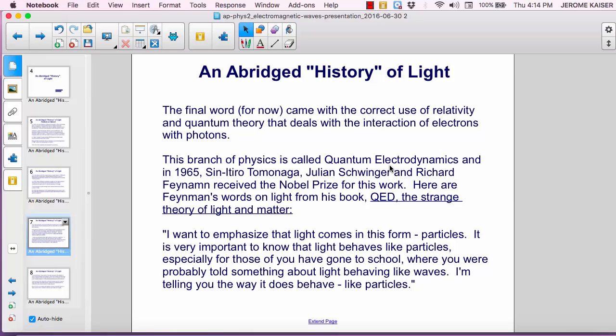This branch of physics is called quantum electrodynamics. In 1965, Sinitiro Tomonaga, Julian Schwinger and Richard Feynman received the Nobel Prize for this work. Here are Feynman's words on light from his book, QED, The Strange Theory of Light and Matter.